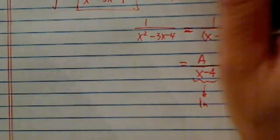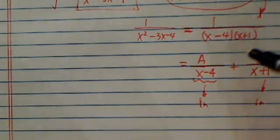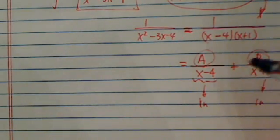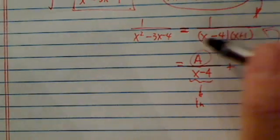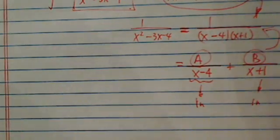So partial fraction, this is where the name comes from. We need to find A and B such that when you multiply this out, this one is equal to 1 over x minus 4 times x plus 1.